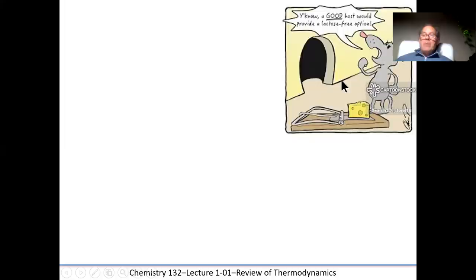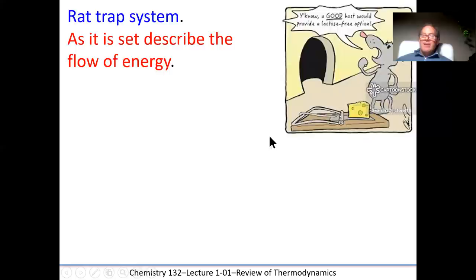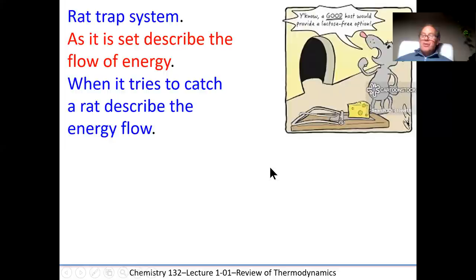Let's look at how that energy can be compared using a simple mousetrap. A mousetrap has a spring — it's spring loaded. As it is set, energy is put into the system to set the trap. When it tries to catch the rat, the energy is flowing from the trap to the mouse as he tries to get the cheese. The mouse is going to get captured — stored energy is being released.